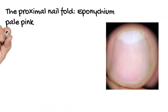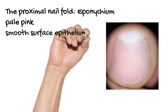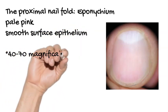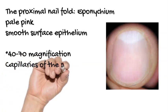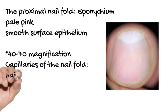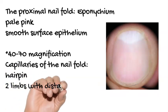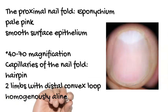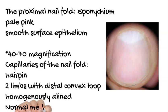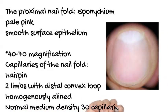The proximal nail fold will appear as a pale pink smooth surface epithelium. At 40 to 70x magnification, the capillaries of the nail fold appear as a hairpin-like structure with two limbs and a distal convex loop, homogeneously aligned, with normal medium density of about 30 capillaries per 5 millimeters.